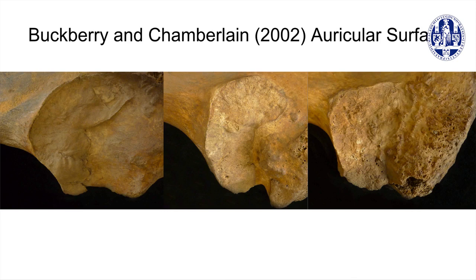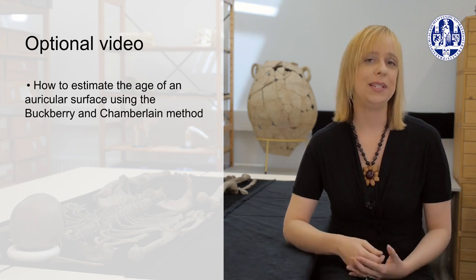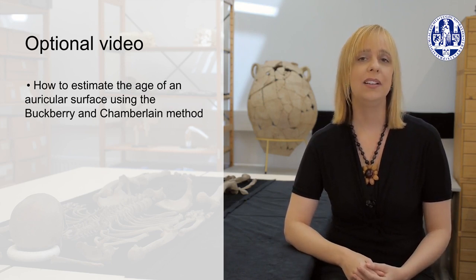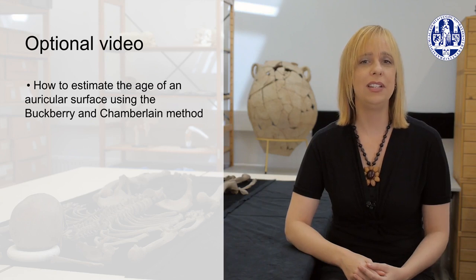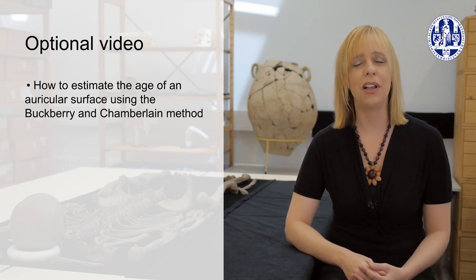Buckberry and Chamberlain score the appearance of five features of the auricular surface: transverse organization, surface texture, microporosity, macroporosity, and changes in the morphology of the apex area. One adds up the scores of each separate area to get a composite score and uses a table to derive an age estimate. No difference has been found between males and females, so only one table is needed. An optional video under course documents with Anna Morine will show you how to estimate age using the Buckberry and Chamberlain method.